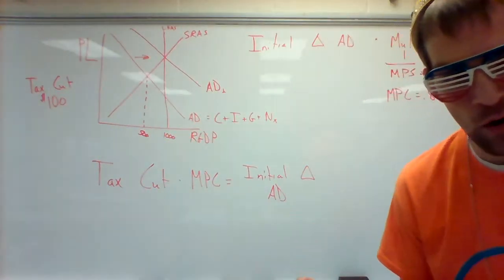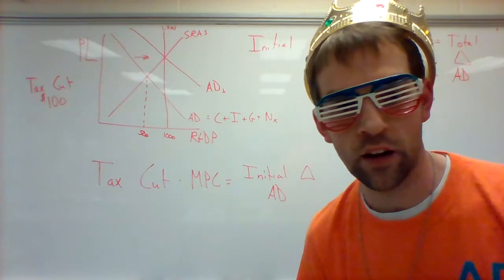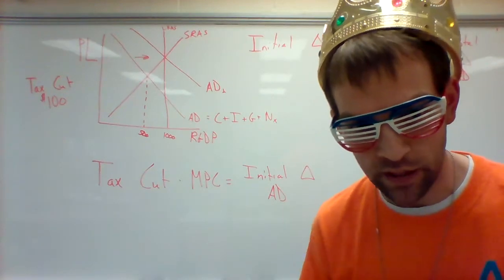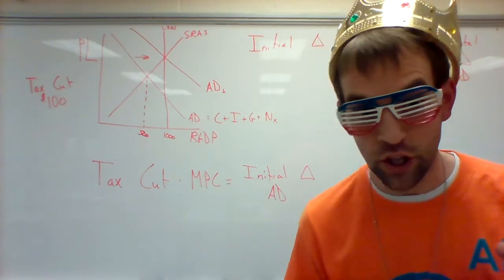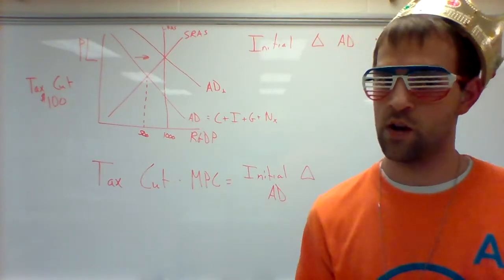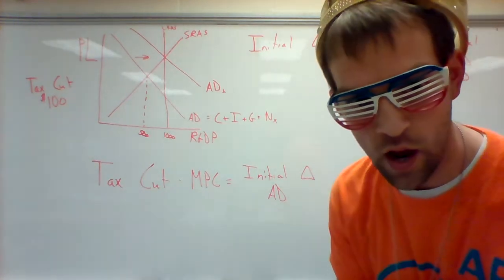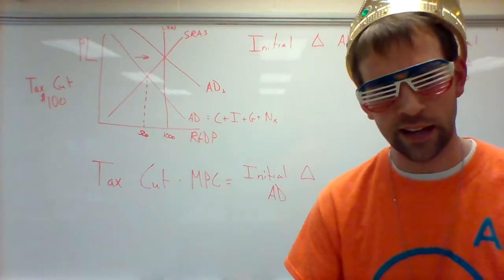Welcome back. So we just looked at how the multiplier effect would work in a case where the government decided to build like a hundred dollars worth of roads and bridges. And we just used a hundred. We know they'd spend way more, but a hundred just makes the math a little bit easier so that you get the concept and not the algebra.